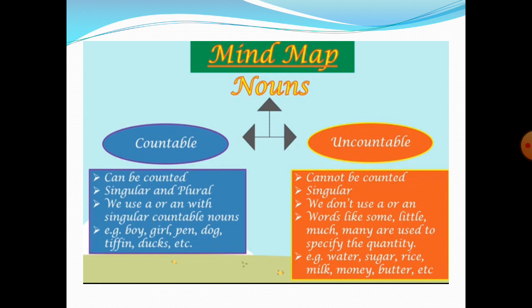Now coming to uncountable nouns — uncountable nouns cannot be counted. They are singular in form and not plural, and we do not use a or an with uncountable nouns. Words like some, little, much, many are used to specify their quantity. For example, water is an uncountable noun — you would say I want a glass of water, or I have a bottle of water. Sugar, rice, milk, money, and butter are all uncountable nouns.